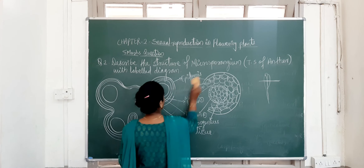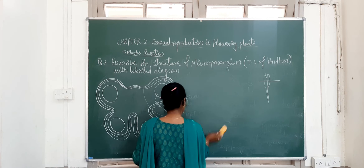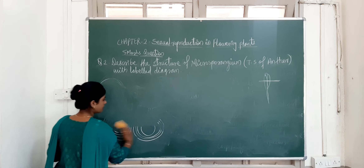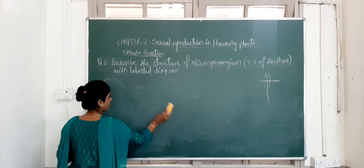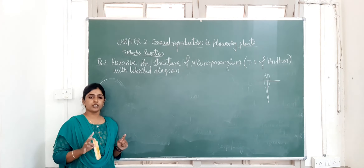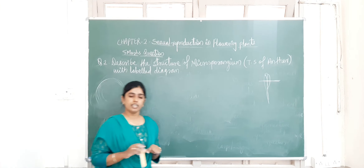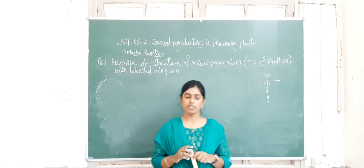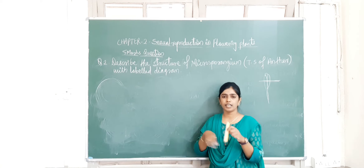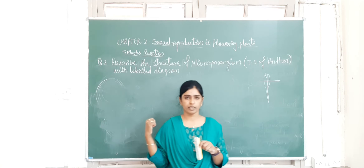The two questions we have discussed in today's class are: one — the LS of flower, and two — the structure of microsporangium, that is the TS of anther. The remaining questions we will discuss in the next class. Until then, stay home, stay safe. You have to make practice of drawing these diagrams. We will send you Google Classroom assignments on this topic. Thank you.